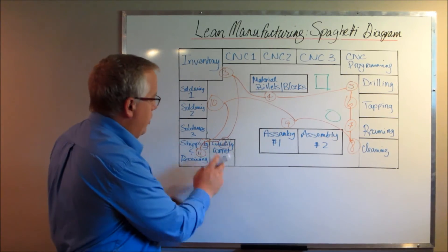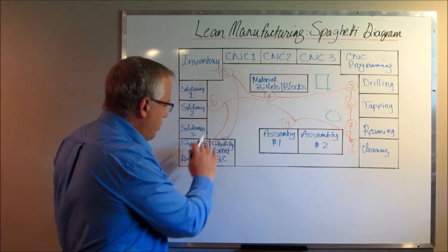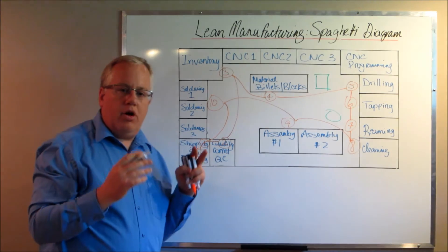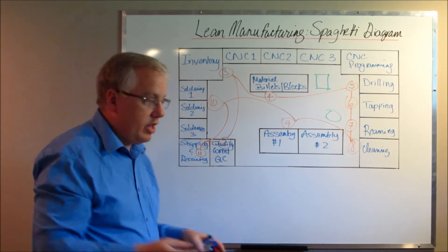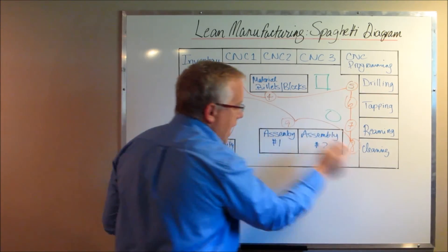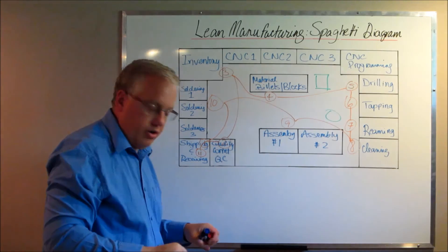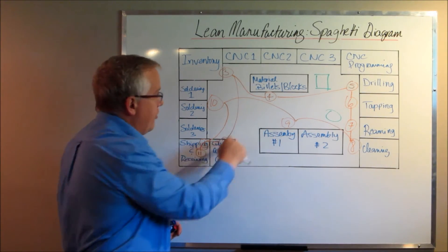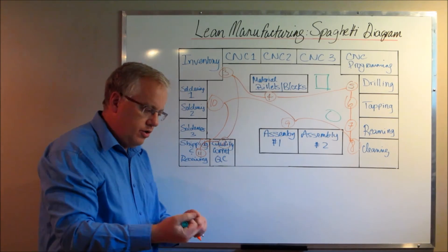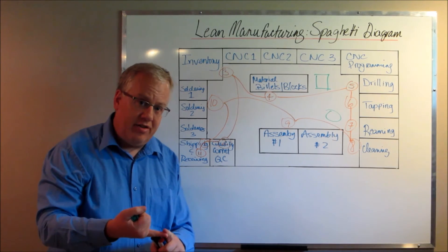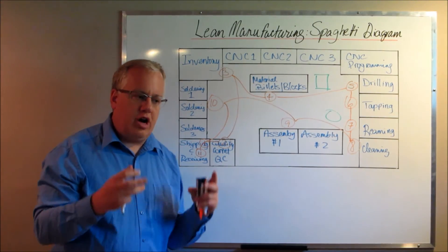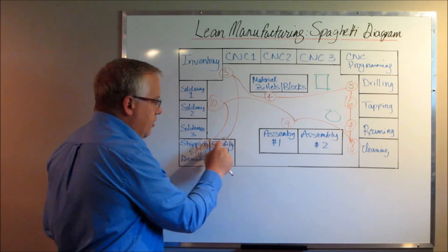Now you've mapped out your shop floor and put sequential numbers showing how work flows from one process to the next. Take a measuring wheel onto your shop floor and measure the distance between every step — step one to two, two to three, three to four, and every single step. Then watch how the work flows through the process, pay attention to any sign-offs, any time employees have to stop and wait, and record the time it takes to move work from one process to the next.